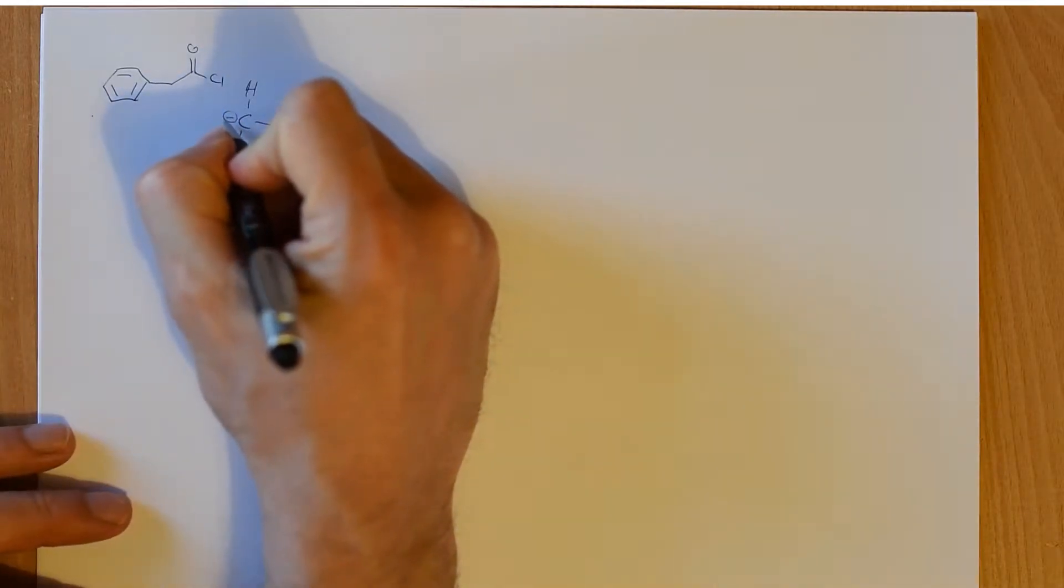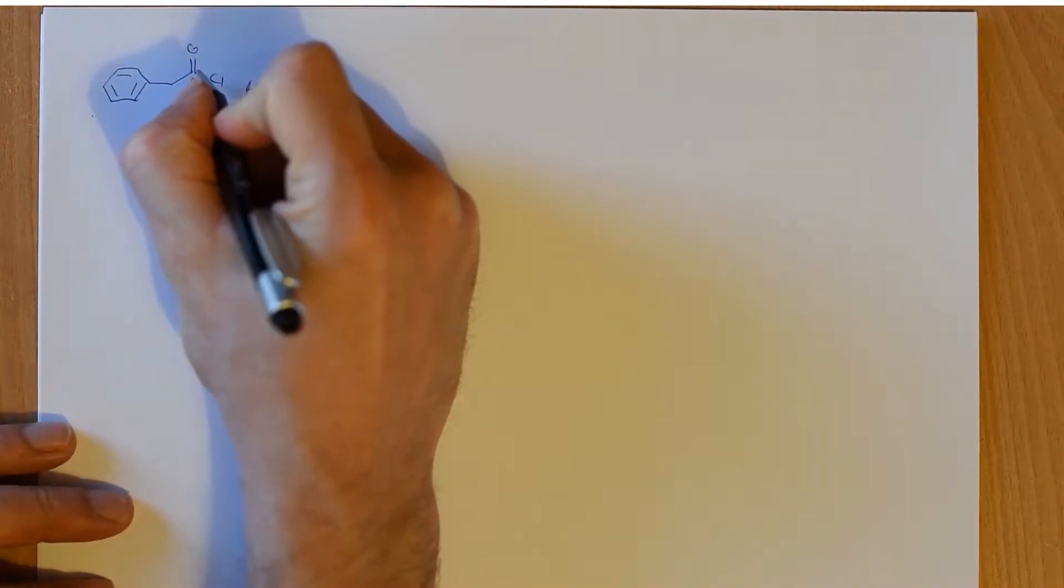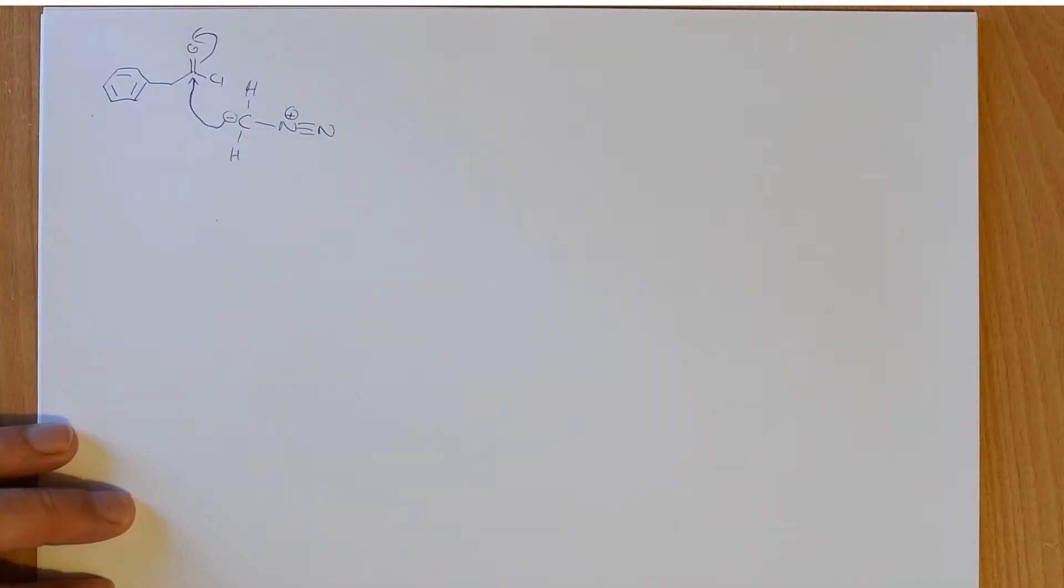But in this case, assuming we're going to do the reaction, it's going to act as a nucleophile, and it's going to attack our carbonyl carbon and form a tetrahedral intermediate.